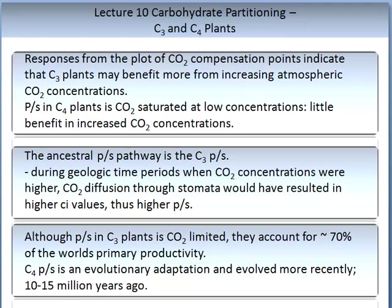The ancestral photosynthetic pathway is the C3 photosynthetic pathway. During geological time periods when carbon dioxide concentrations were higher, CO2 diffusion through stomata would have resulted in higher CI values, thus higher photosynthetic rates. Although photosynthesis in C3 plants is carbon dioxide limited, they account for approximately 70% of the world's primary productivity. C4 photosynthesis is an evolutionary adaptation that evolved more recently, between 10 and 15 million years ago.